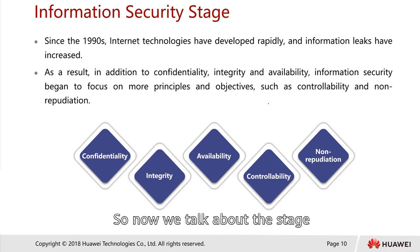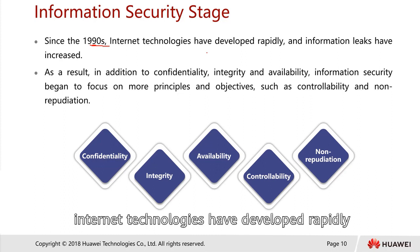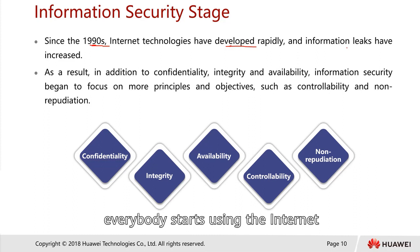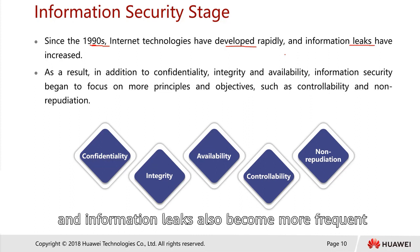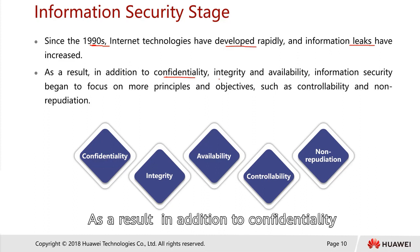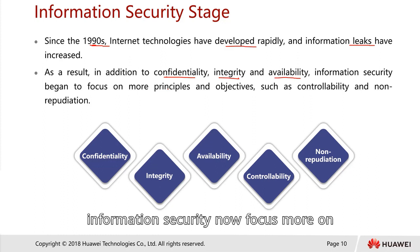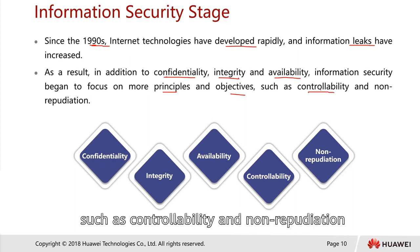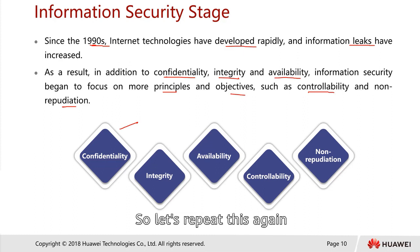Now we talk about the information security stage — the new era. In the nineties, when the internet became rapidly developed, everybody started using the internet and information leaks became more frequent. As a result, in addition to confidentiality, integrity, and availability, information security now focused more on other principles and objectives such as controllability and non-repudiation.